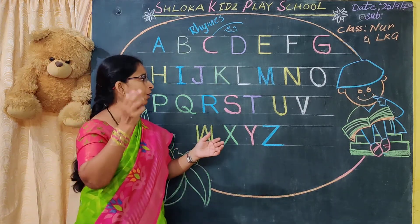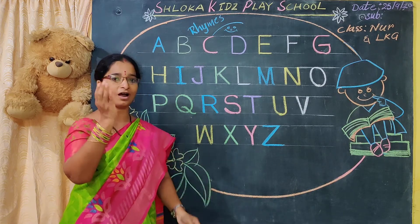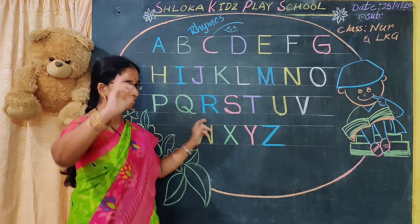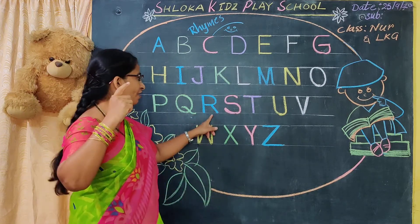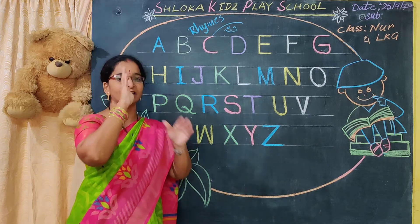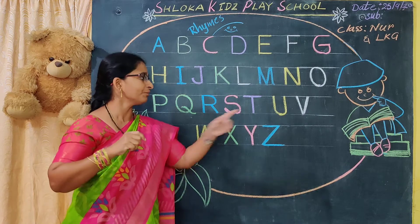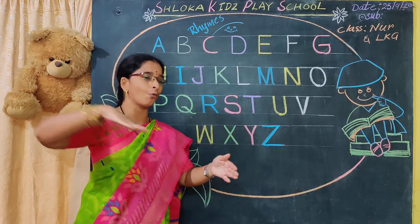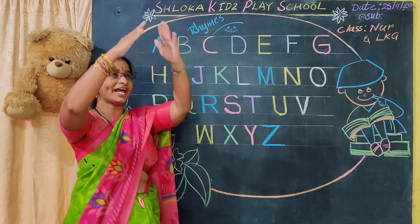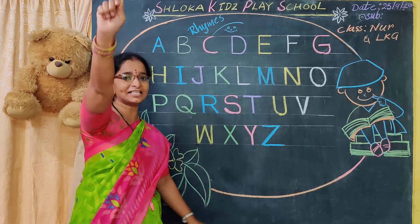L for lion. M for mango. N for nest. O for orange. P for parrot. Q for queen. R for rabbit. S for sun. T for train. U for umbrella. V for van. W for watch. X for Christmas tree. Y for yard. Z for zip.